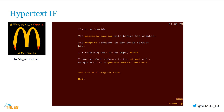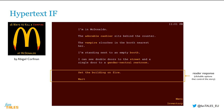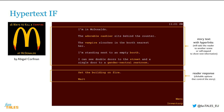A variation on choice-based interactive fiction is hypertext interactive fiction. The main difference is in the way the text presents itself. As with regular choice-based interactive fiction, you will find options that control the story below the main story text. But you will also find hyperlinks in the story text itself. These links can take you to a new scene, or can expand the hyperlink text to uncover hidden information.